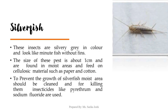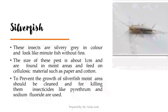Silverfish are a very common pest. As the name suggests, these insects are silvery gray in color and look like a minute fish without fins. They are very tiny — about one centimeter in size — and are mostly found in moist areas, feeding on cellulosic material such as paper and cotton. To prevent the growth of silverfish, moist areas should be kept clean, and insecticides like pyrethrum and sodium fluoride can be used to kill them.